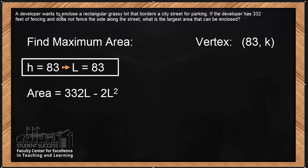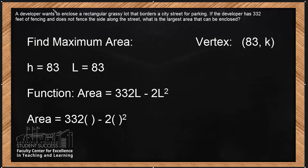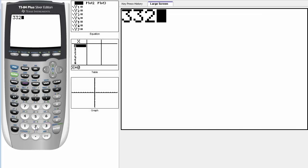So if I substitute L into this particular function, I can find the corresponding area. 332 times the length, and our length was 83. Going back, minus 2 times length squared. Now using our calculators, we can find the area. Remember that our length was 83. So we're going to find the area. 332 times 83 minus 2 times 83 squared.